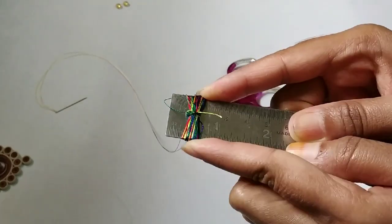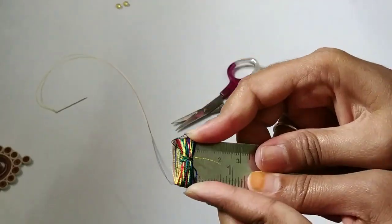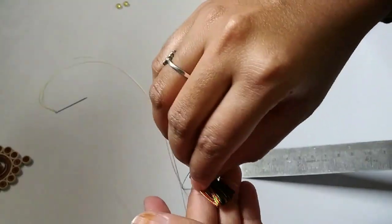Once you are done tying the knot, now we need to just pull out the thread from the scale. As I am showing here, just pull out the thread.